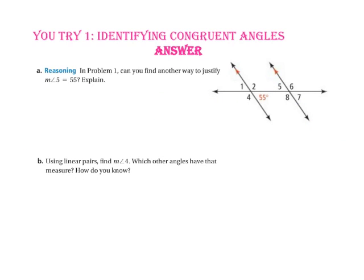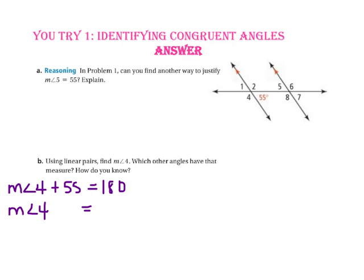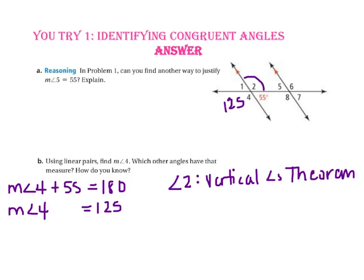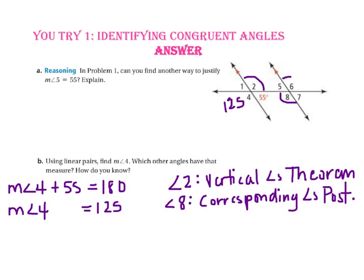In part B, we are asked to use linear pairs to find the measure of angle 4. Since the 55-degree angle and angle 4 are a linear pair, if we add 55 to the measure of angle 4, we will get 180 degrees. If we subtract 55 from both sides, the measure of angle 4 equals 125. The other angles that also measure 125 are angle 2 because it is vertical to angle 4, angle 8 because it is corresponding to angle 4, and angle 6 because it is an alternate exterior angle to angle 4.